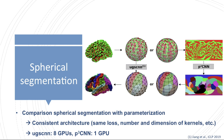Here in our study we use the UGS CNN by Zhang et al., which is one of the few spherical segmentation networks published so far, to perform surface-based segmentation of the human cortex.